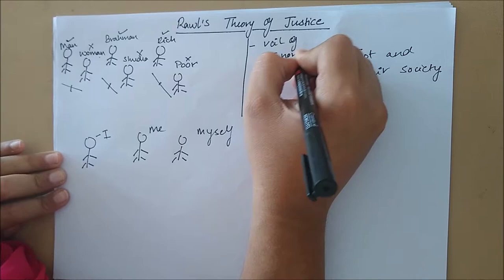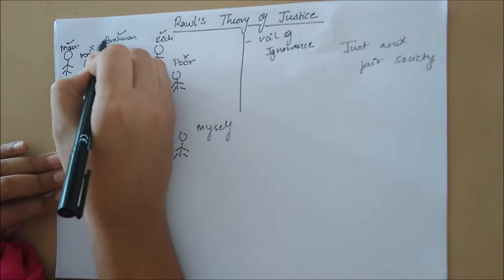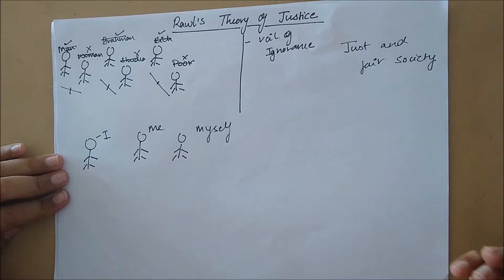The veil of ignorance is a thought experiment introduced by Rawls under which the people behind the veil are unaware of their social location. That is, they do not know their gender, caste, economic status, or race.